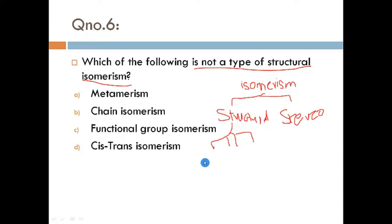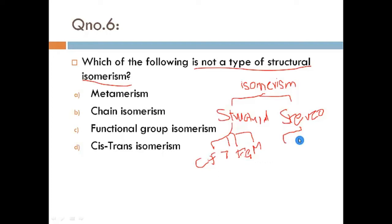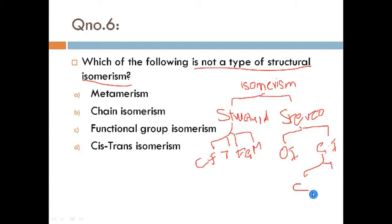Structural isomerism includes chain isomerism, tautomerism, functional group isomerism, and metamerism. Whereas stereoisomers are further divided into two types: optical isomerism and geometrical isomerism. Geometrical isomerism is further subdivided into two types: cis and trans isomerism.